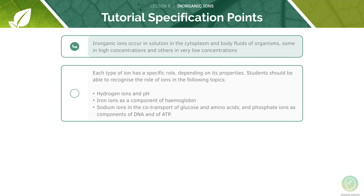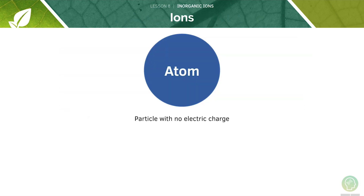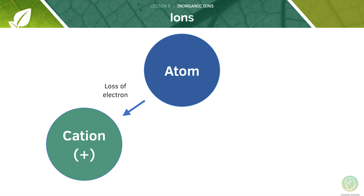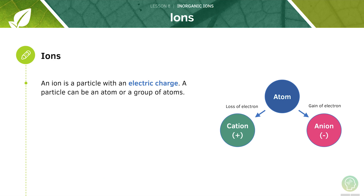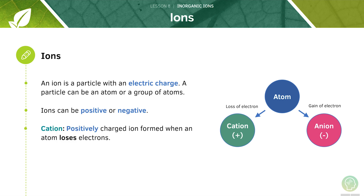The first point is to look at inorganic ions. An ion is a particle with an electric charge, formed when an atom transfers its electrons to another atom. Cations are positively charged ions formed due to electron loss. Anions are negatively charged ions formed when an atom gains electrons. These ions can be either positive or negative.